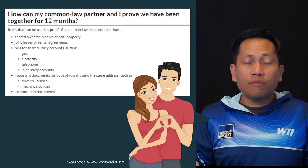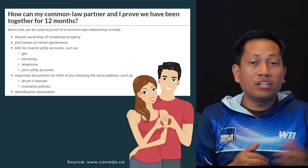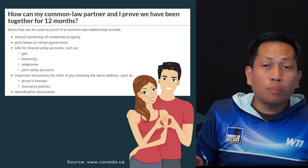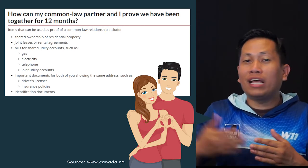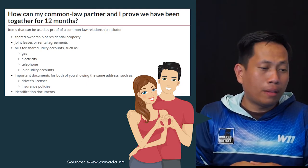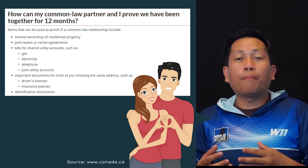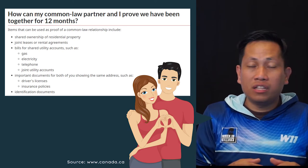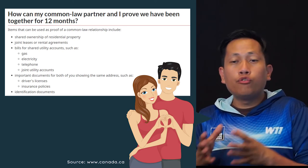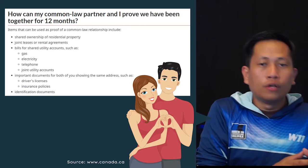Another way is a driver's license — you have a driver's license and the same address is listed. Another way is an insurance policy — maybe you declare your partner as your dependent. There is a lot of information and examples available on Canada.ca. Those are ways to prove that you are common law.